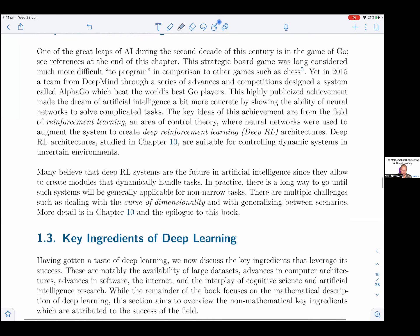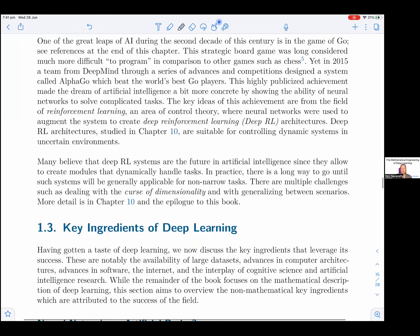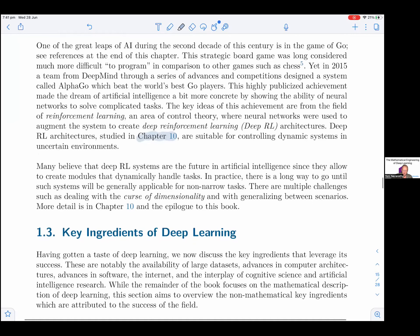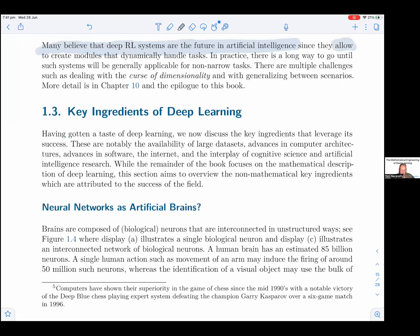Deep RL architectures studied in chapter 8 are suitable for controlling dynamic systems in uncertain environments. Many believe that deep RL systems are the future of artificial intelligence since they allow to create modules that dynamically handle tasks. In practice, there is a long way to go until such systems will be generally applicable for non-narrow tasks. There are multiple challenges, such as dealing with the curse of dimensionality and with generalizing between scenarios. More details are in chapter 8 and the epilogue of this book.